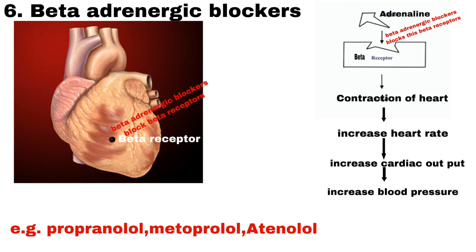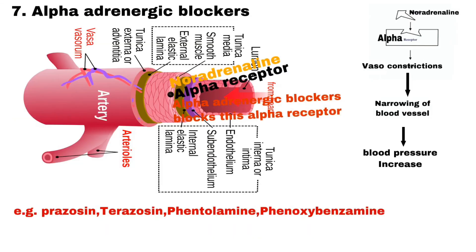Beta blockers also help open up your veins and arteries to improve blood flow. Examples of beta adrenergic blockers are Propranolol, Metoprolol and Atenolol.